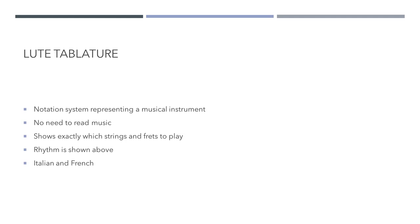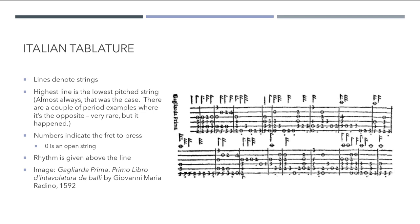So let's take a look at both types of tablature, starting with Italian. In Italian lute tablature, the lines denote the strings, with the top line of the tablature referring to the lowest pitched string on the instrument. Frets are indicated using numbers on the lines. Zero refers to an open string, one refers to the first fret, two refers to the second fret, and so on. The rhythm with which to play is indicated above the tablature. There were some very limited cases where the order of strings in Italian tablature was reversed, but these are very, very rare. The image you see here is from a piece written in 1592.